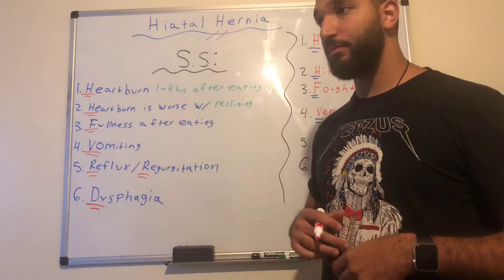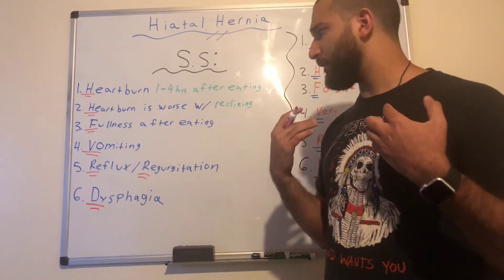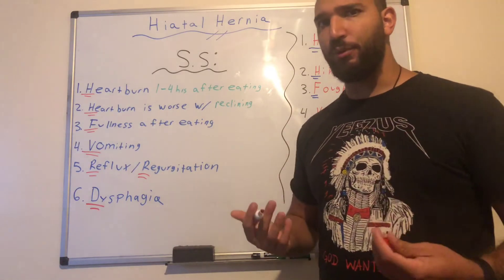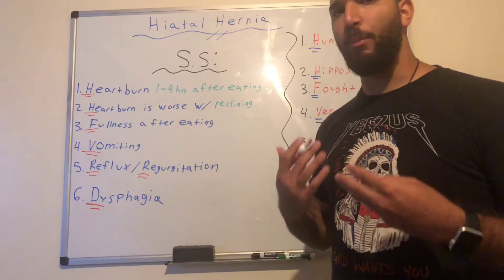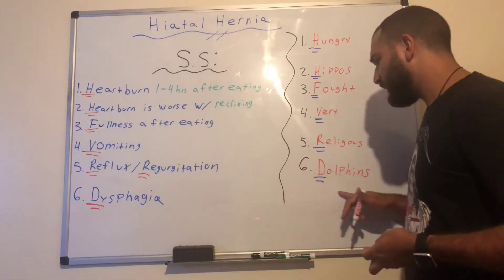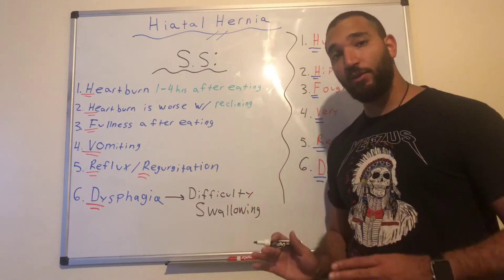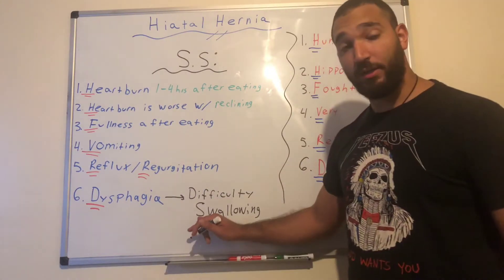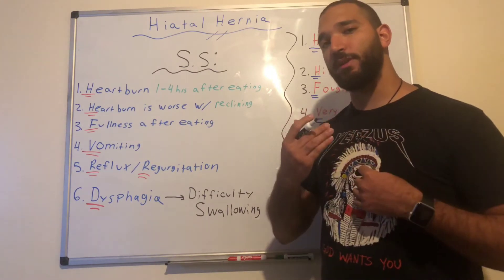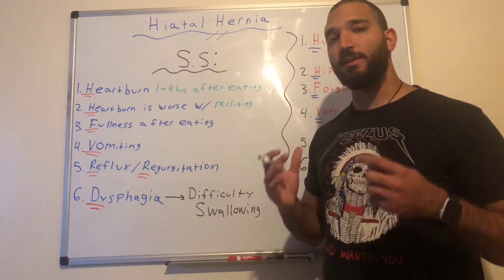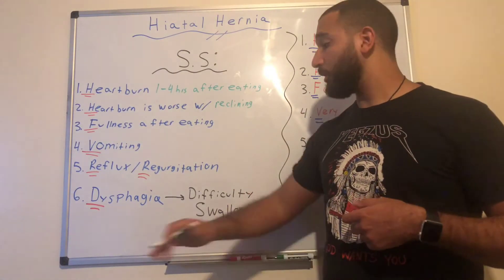A patient will experience regurgitation after taking in food — it will be very difficult to hold food down most of the time. The D in 'Dolphins' stands for dysphagia. Dysphagia is difficulty swallowing, because the abdominal pressure causes acid to move up into the esophagus, which irritates the esophageal lining and makes swallowing extremely difficult.